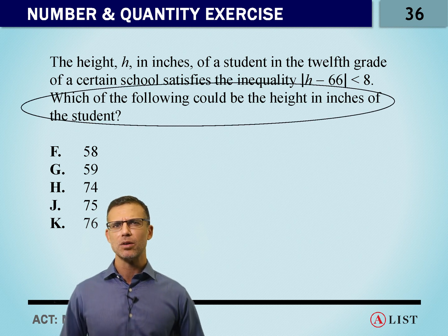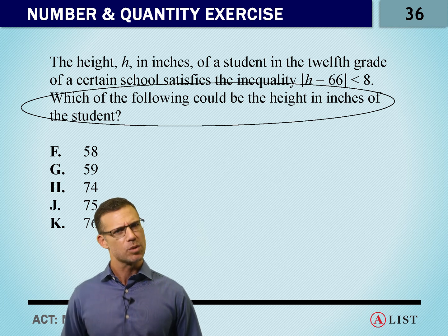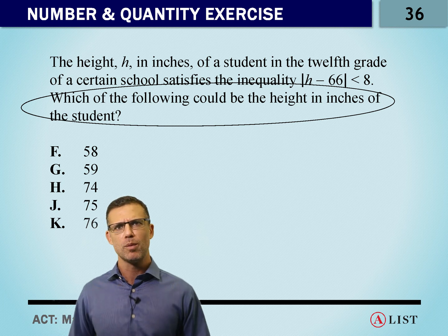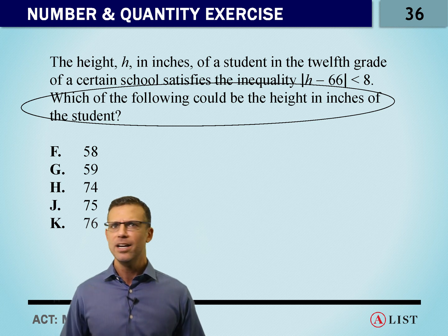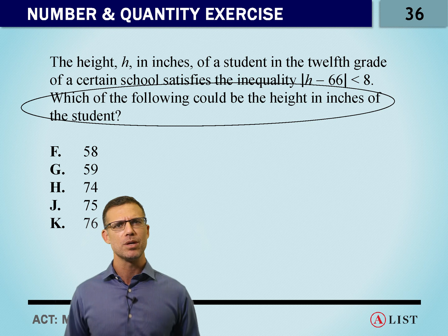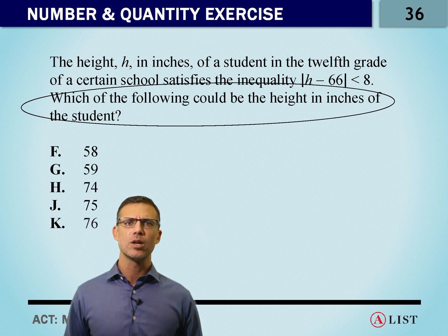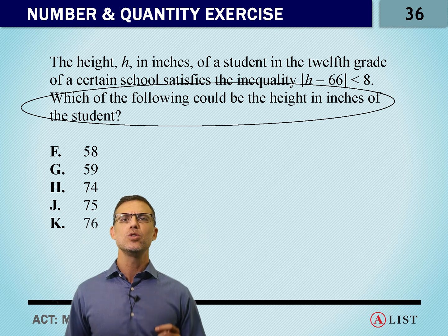This problem might look a little complicated. We've got inequalities, we've got some absolute value, we've got a word problem trying to figure out the height of some student. All of these things can come together to make the problem seem challenging. But it shouldn't be for us. When we circle the end of the question and they ask what could be the height, we can use backsolve.